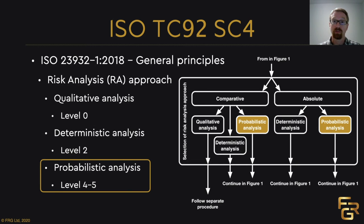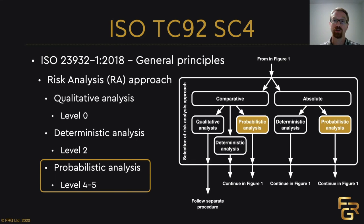The final risk analysis approach used sometimes in fire safety engineering is the probabilistic analysis — at level four or five. This is when you create event trees or assign distributions to fire size and fire growth and do a Monte Carlo simulation. To be honest, this is not used a lot in fire safety engineering — it's mainly used for very complex and large buildings or infrastructure projects like tunnels, where the extra effort is worth it to get a good idea of how dangerous the structure actually is.